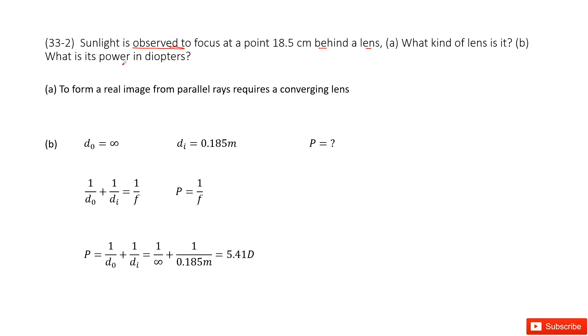And what is its power in diopters? Now we write down the given quantities. First, for the lens on Earth, the sunlight comes from the sun, so the object distance can be considered as infinity.